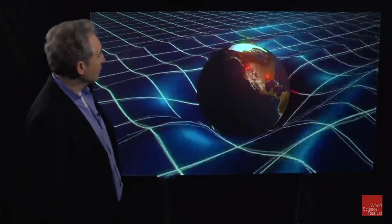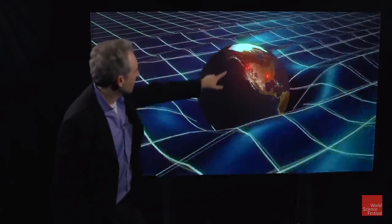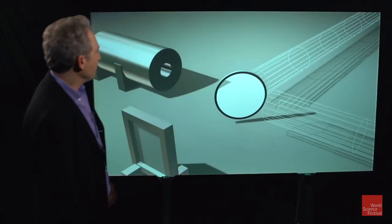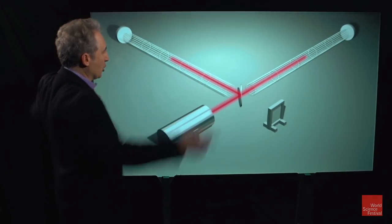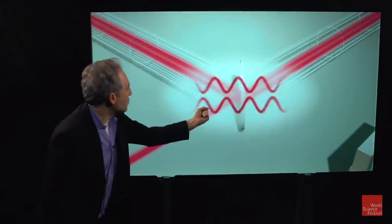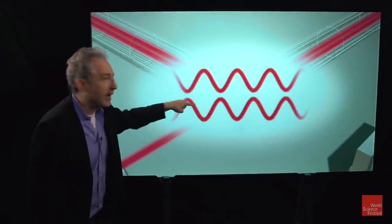But that is what the LIGO team has now achieved. And they did it with two detectors, one in Louisiana, the other in Washington State. These detectors fire laser beams along two four-kilometer-long evacuated tunnels.